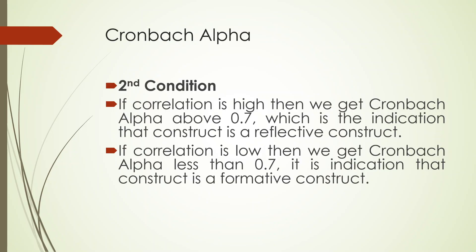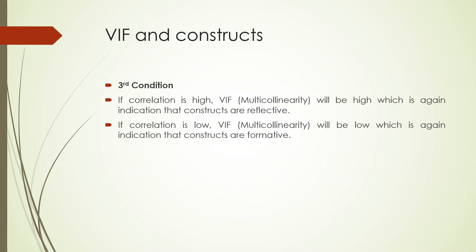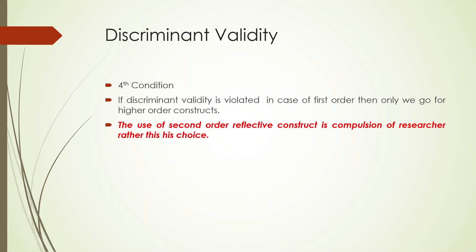The second condition: if correlation is high, we get Cronbach's alpha above 0.7, which is an indication of a reflective construct. If correlation is low, we are bound to get low Cronbach's alpha, indicating a formative construct. Regarding VIF: if correlation is high, multicollinearity will be very high — again indicating reflective constructs. If correlation is low, VIF will be low, indicating formative constructs.